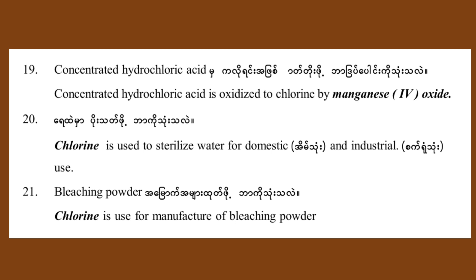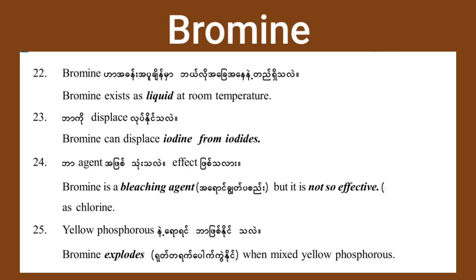Chlorine is used for the manufacture of bleaching powder. Bromine is used to sterilize water. Bromine exists as a liquid at room temperature.